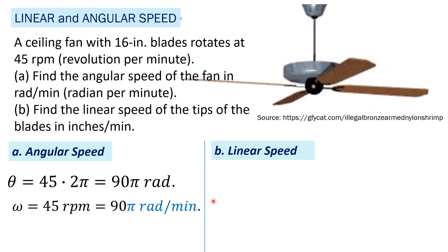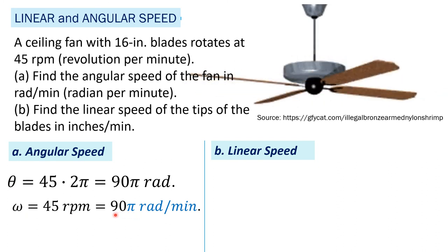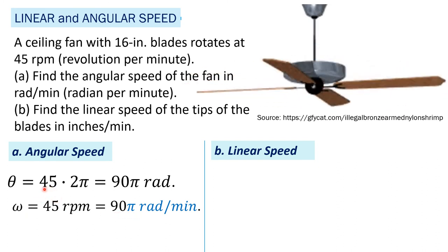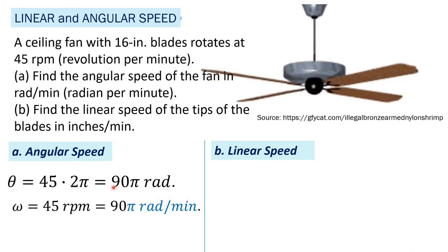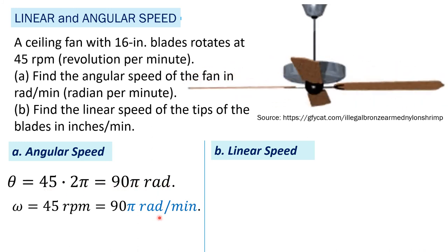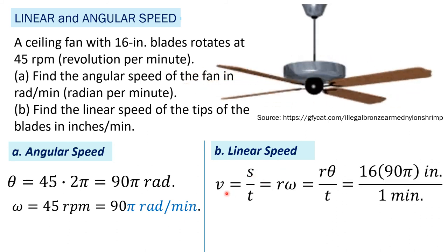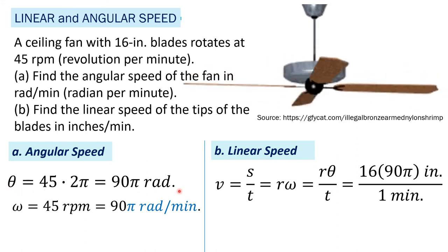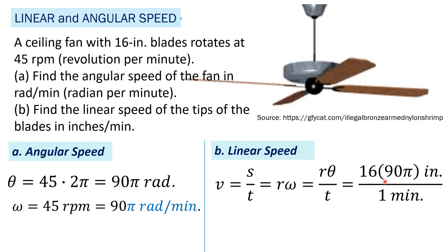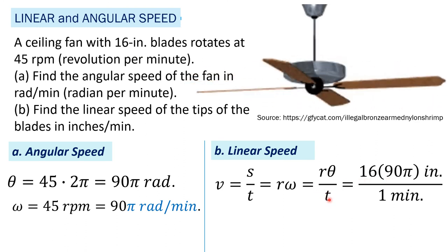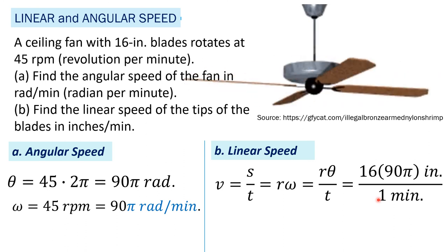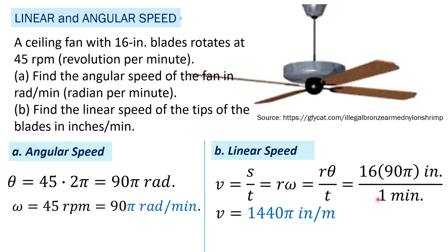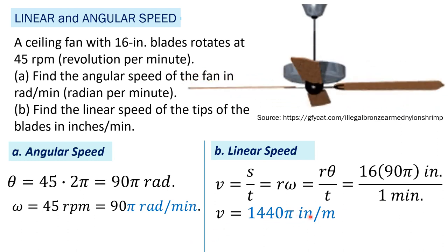For linear speed: theta is 90 pi radians already solved. The radius is 16 inches, and the time is 1 minute. So s equals 16 times 90 pi, giving 1440 pi inches. The linear speed is therefore 1440 pi inches per minute.